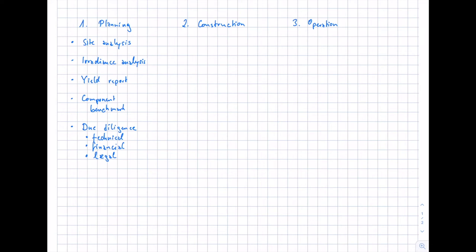Those are the topics for the planning phase. Next, let's look at the construction phase — what is important during the second phase. One key issue is inspection on site: technical experts go on site, observe what is going on, and document all phases of construction in order to identify problems. This is very important, as problems are much easier to solve during construction than later during the operation phase.